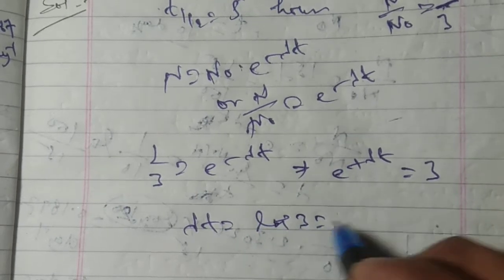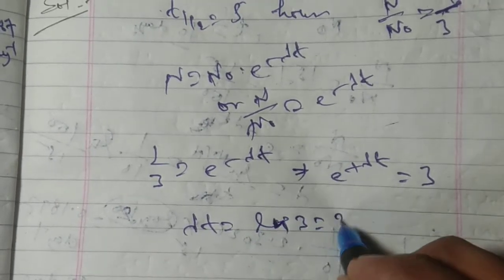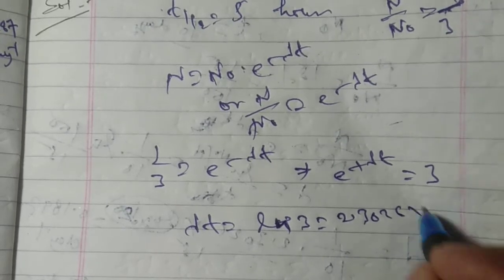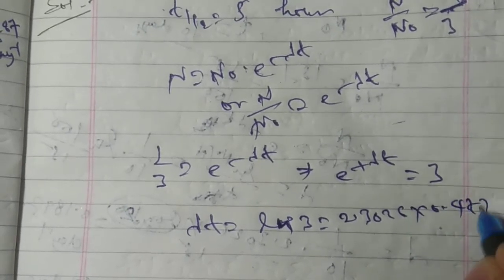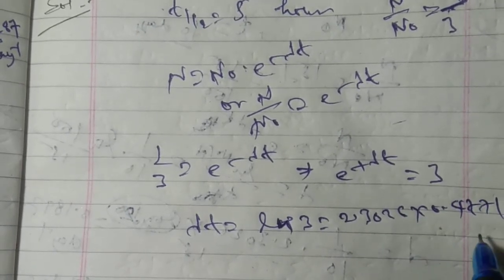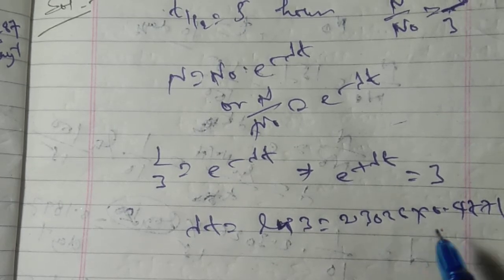Lambda t equal to ln 3, which is equal to 2.3026 into 0.4771. This is the value of log base 10 of 3.